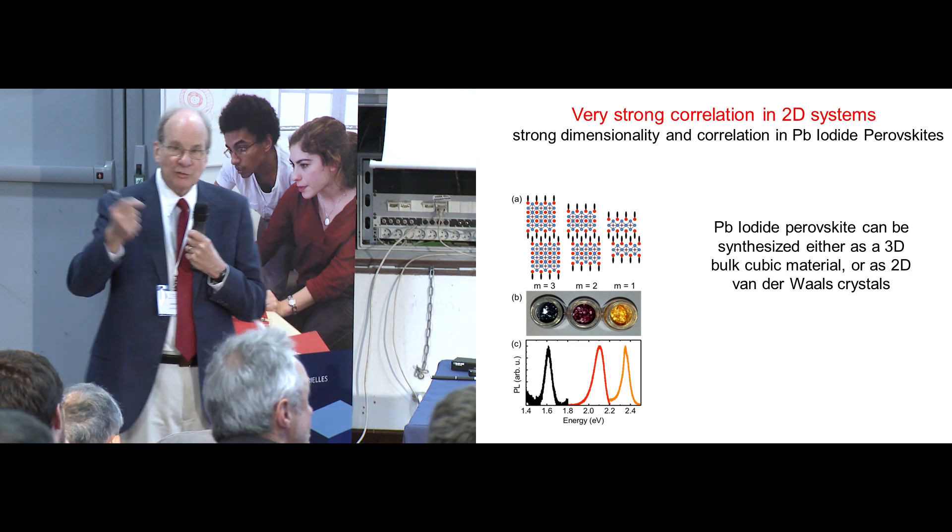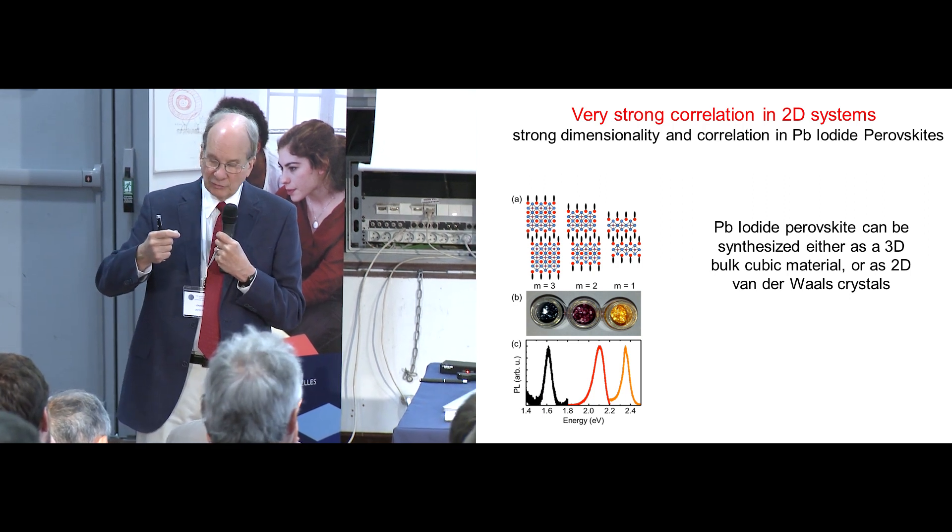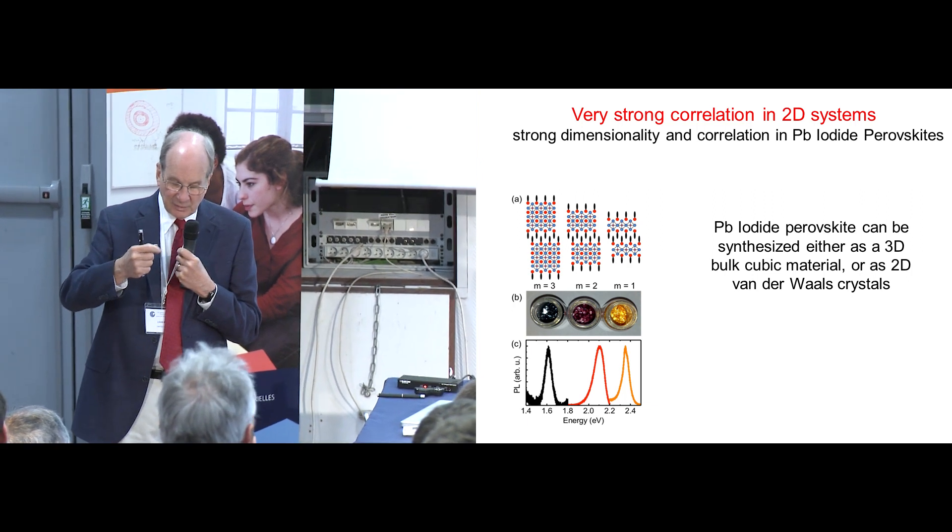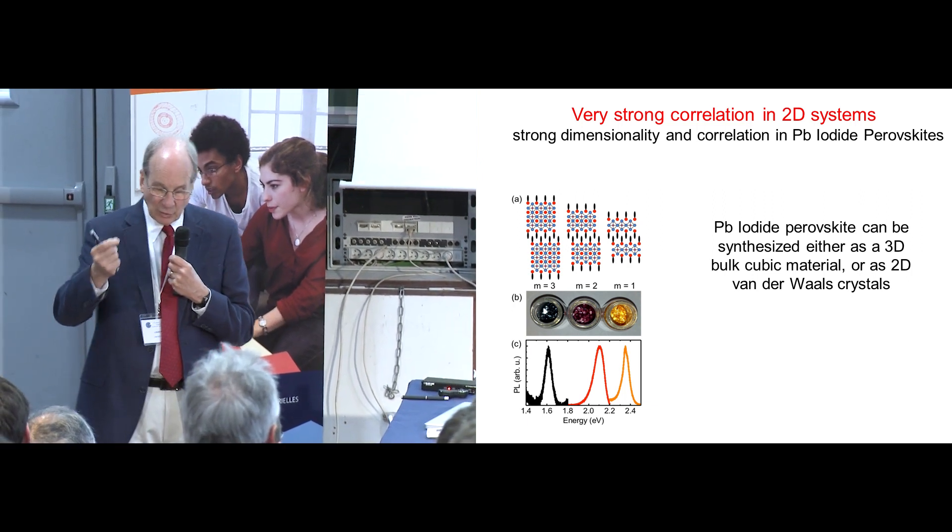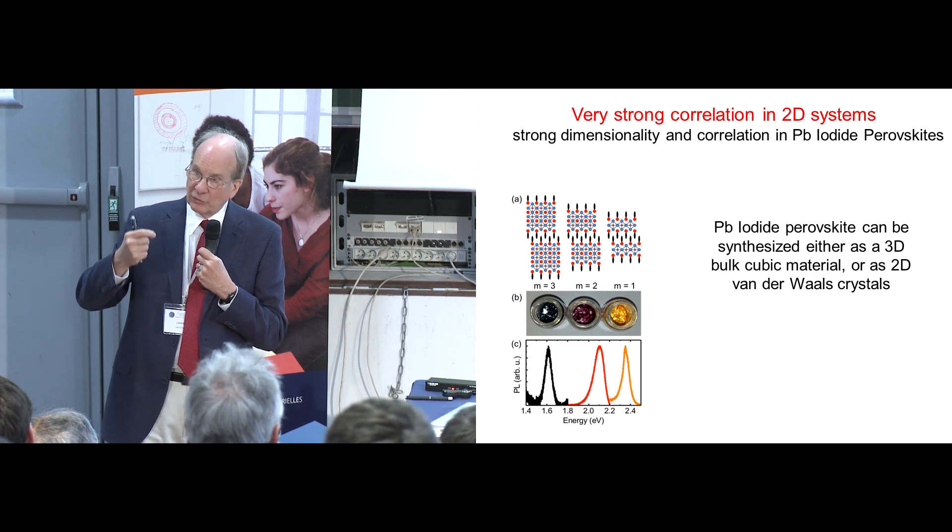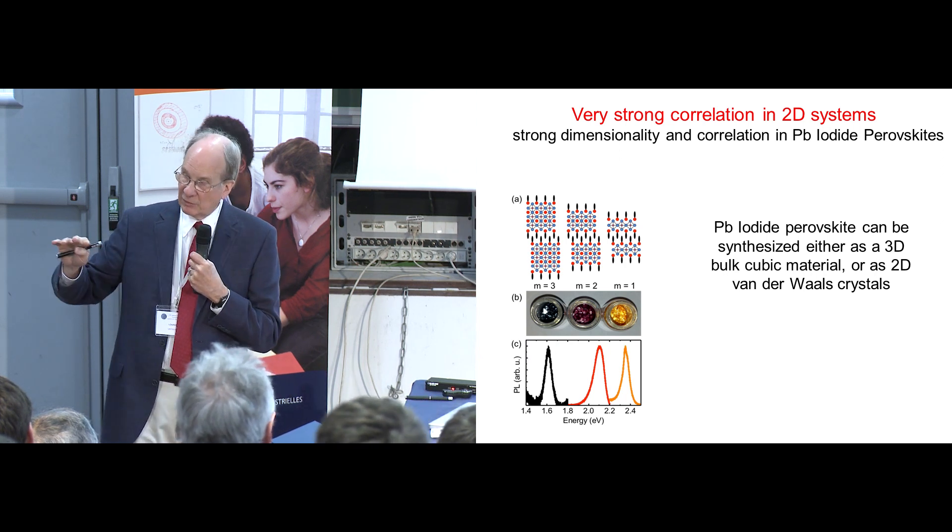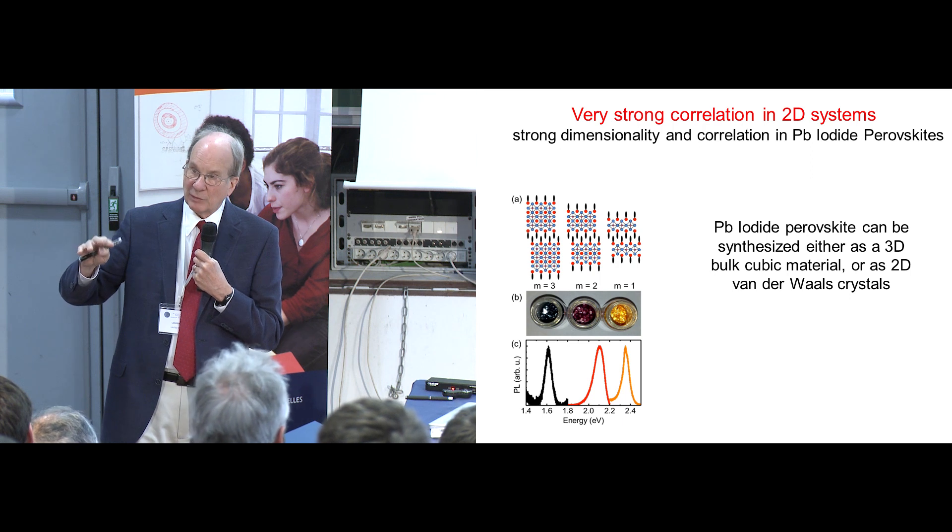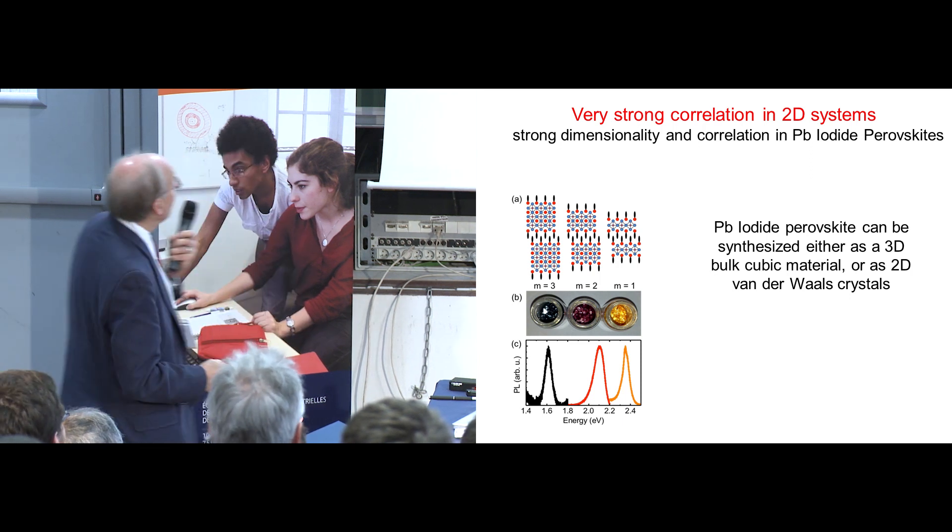If you choose a larger counter ion, suppose you have octylammonium ion, that's too big to sit in the interstitial space. And so in the synthesis that will make a layered van der Waals crystal rather than a cubic bulk three-dimensional crystal.